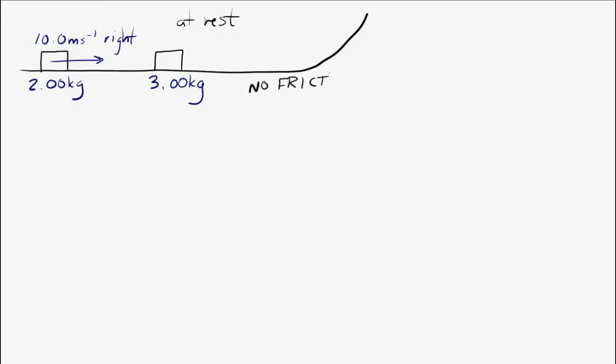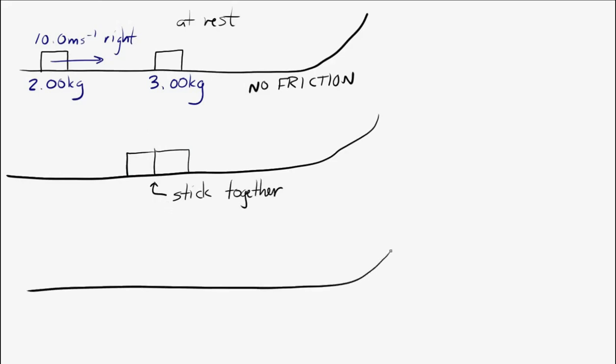So the block is going to hit the other block. And in this problem, let's say that they stick together after the impact. So it's a completely inelastic collision. And I want to know the final height or the maximum height that those two combined blocks will reach when they get to that hill.